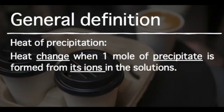A general definition for heat of precipitation is: the heat change when one mole of precipitate is formed from its ions in solution.